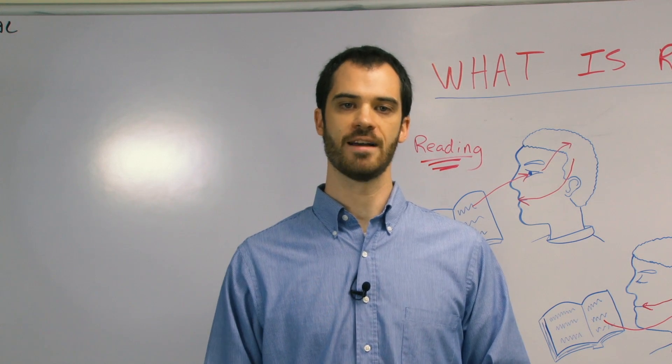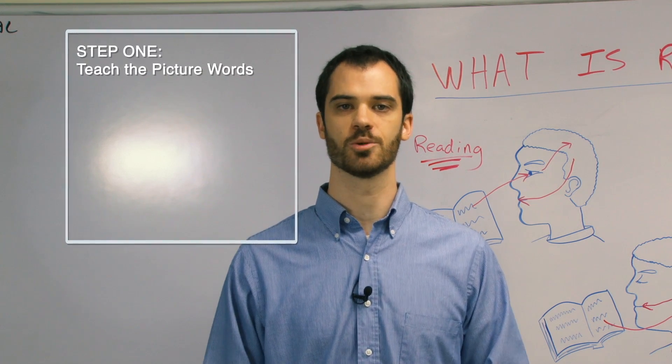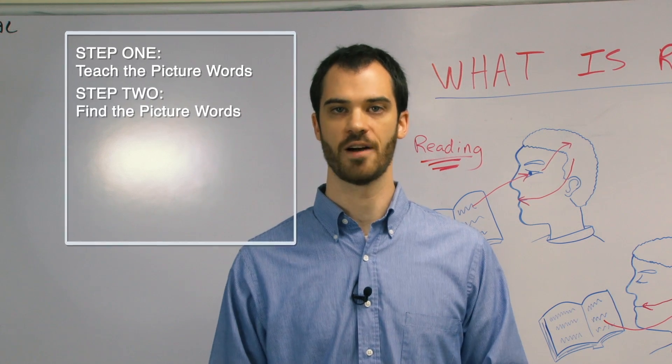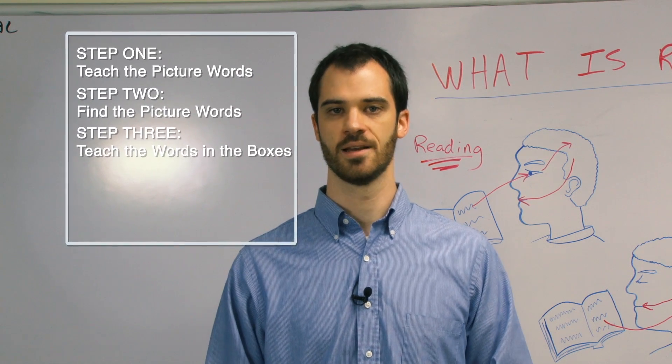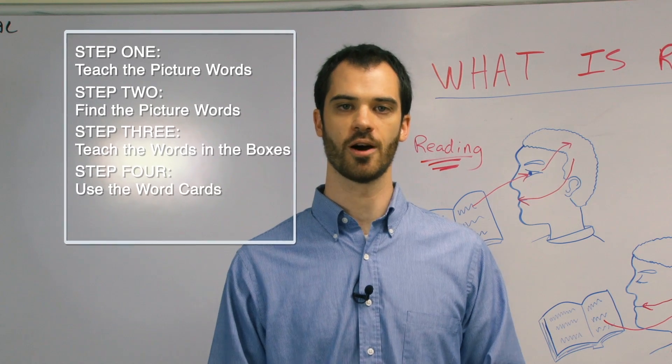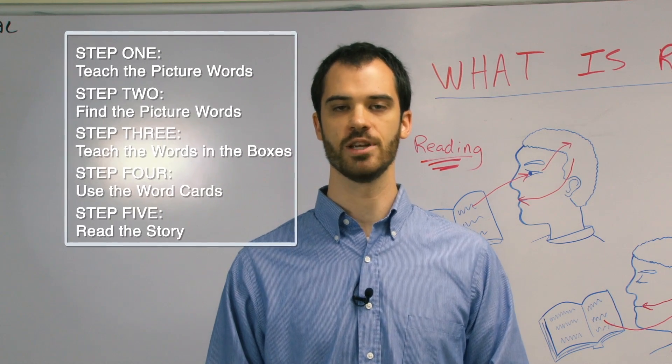So let's review the five steps one more time. Step one, teach the picture words. Step two, find the picture words. Step three, teach the words in the boxes. Step four, use the word cards. And step five, read the story.